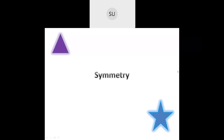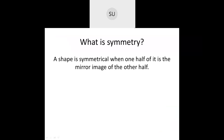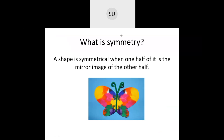Symmetry is when a shape is said to be symmetrical when one half of it is the mirror image of the other half. So when one half of any shape or object is the mirror image of the other half, that shape is said to be symmetrical. If you look at this butterfly, it is symmetrical along this line - this half is the mirror image of this half. So this butterfly is in symmetry.